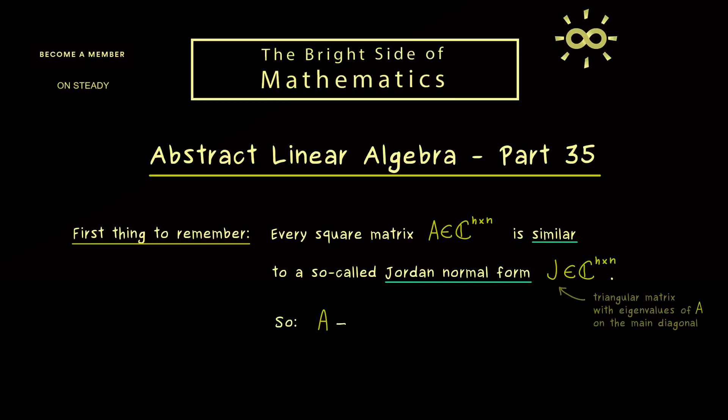And moreover, please recall that the similarity property means that we have an invertible matrix X, such that A is given as X times J times X inverse. So you might remember this important formula from the diagonalization of matrices, where J is given as a diagonal matrix.